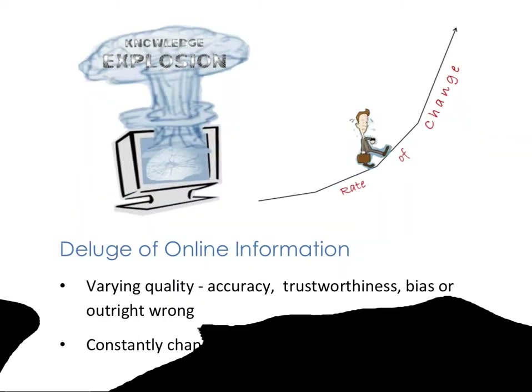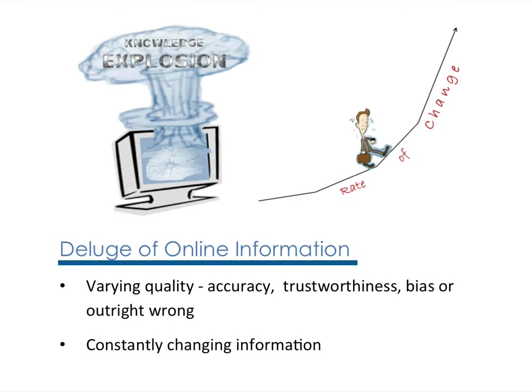Earlier we talked about the deluge of online information. However, what this deluge also implies is that the information or knowledge available is of highly varying quality in terms of its accuracy, trustworthiness, and bias — and sometimes the information available online is outright wrong.